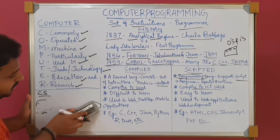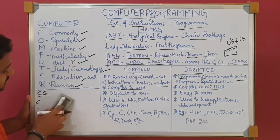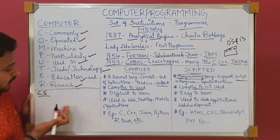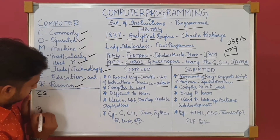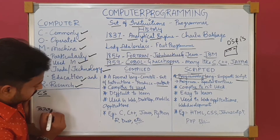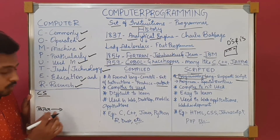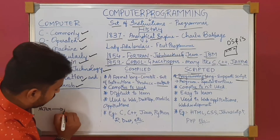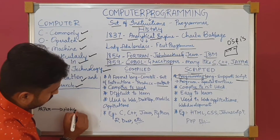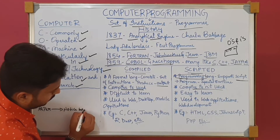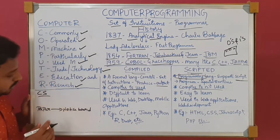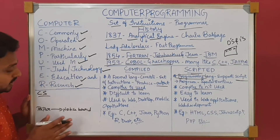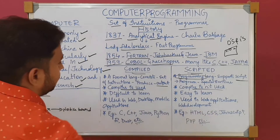For scripted programming, assume that you are studying in the same high school and you have written a computer science exam in paper format. But these papers won't go to your teacher — they will be directly displayed on the notice board, whether wrong or right. This is the example for scripted programming.